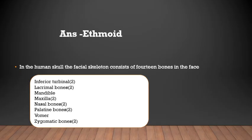Right answer: ethmoid. In the human skull, the facial skeleton consists of 14 bones. They are inferior turbinal, lacrimal bones, mandible, maxilla, nasal bones, palatine bones, vomer, and zygomatic bones. The unpaired bones of the facial skeleton are mandible and vomer.